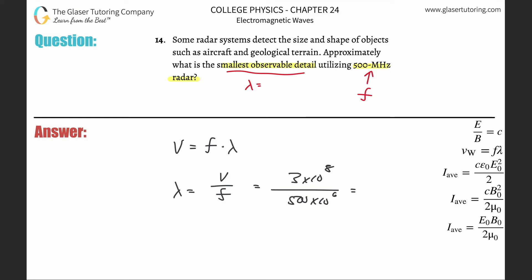That's about 0.6. So that's 0.600. And it is in meters. That would be the smallest observable detail, a little more than a half of a meter long.